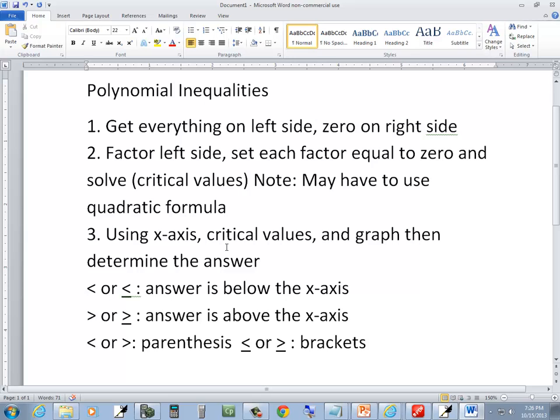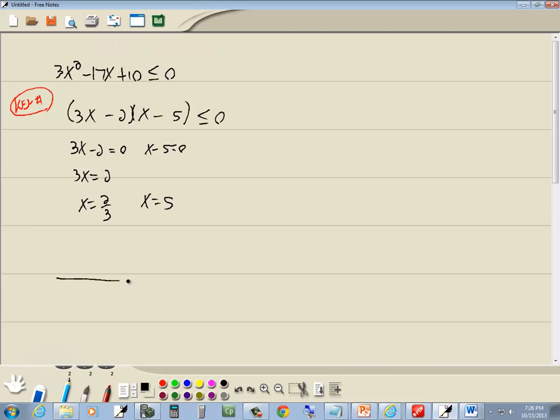Now, step 3, using your x-axis, critical values, and graph, then determine the answer. Here's our x-axis. We'll put 2 thirds here. Smallest critical value should go on the left. Largest critical value should go on the right. Over here is negative infinity. Over here is positive infinity. The critical values separate it into intervals, like that.